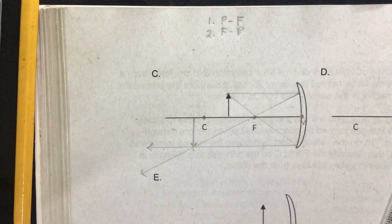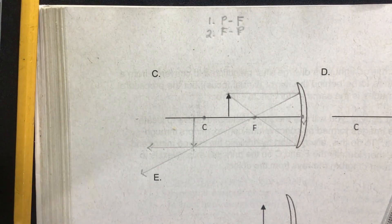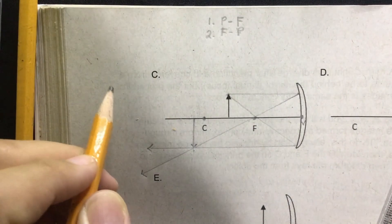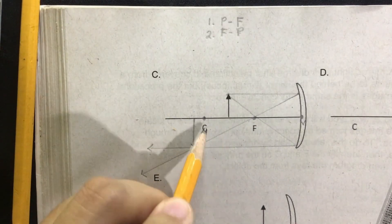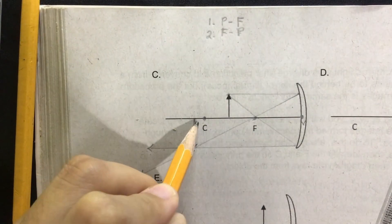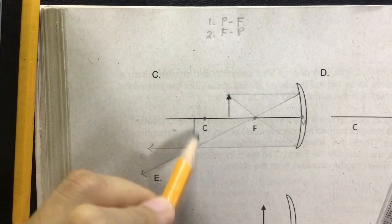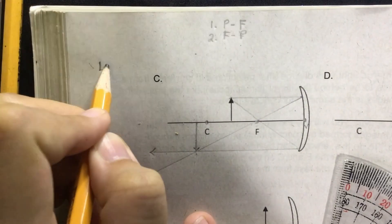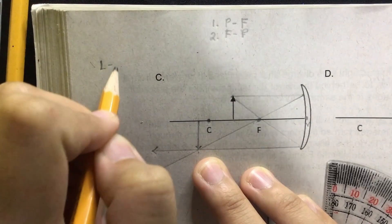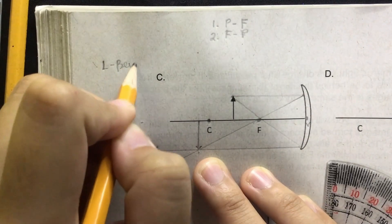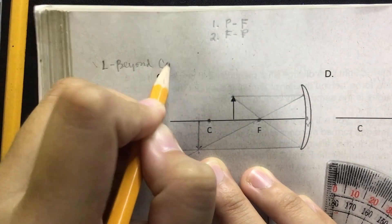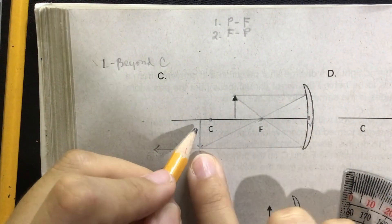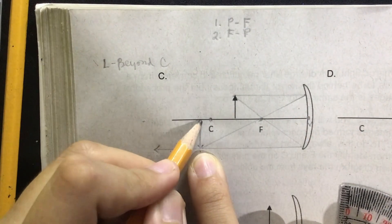Okay, so that is our image. So this time let's describe the image formed when the object's location is between C and F. The image is located beyond C, so let's have the image is located beyond C, still in front of the mirror but specifically it is located beyond C.